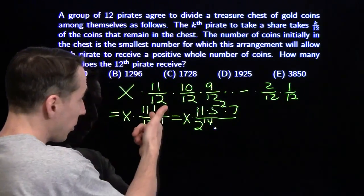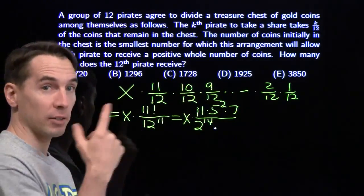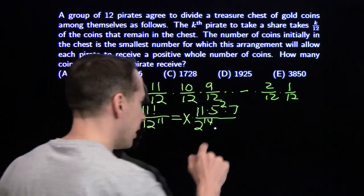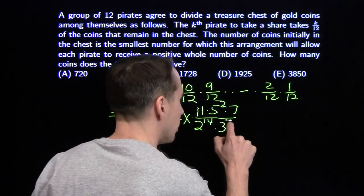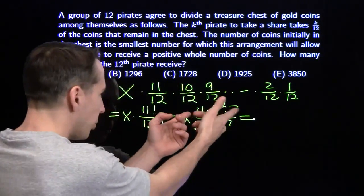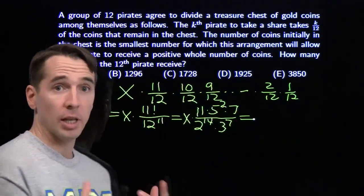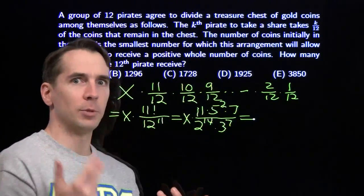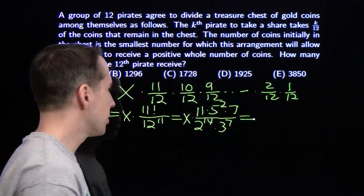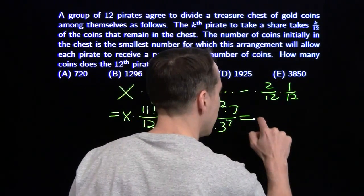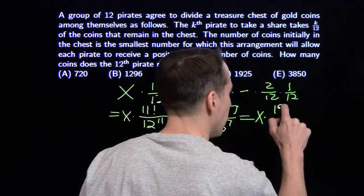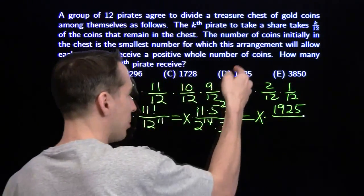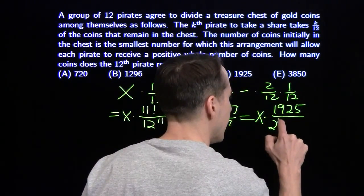For factors of 3: you have 3, 6, and 9 in 11 factorial, with an extra factor from the 9 — so 4 factors of 3 in the numerator, 11 in the denominator, leaving 3 to the 7th. Now we multiply out the numerator: 7 times 11 is 77, times 25. Since 80 times 25 is 2000, 77 times 25 is 1925. And 1925 is right there as an answer choice.